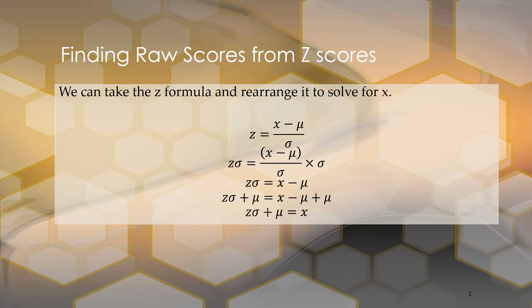We have x on the right side all by itself, so if we move everything to the left side to make it how we normally see formulas, we're going to have x equals the mean plus z times the standard deviation. This is the formula we're going to use if you want to find a raw score from a z-score.